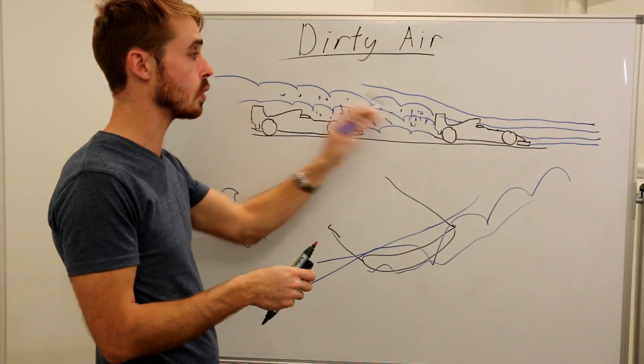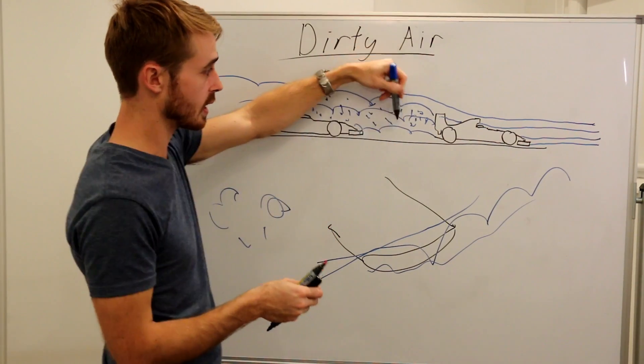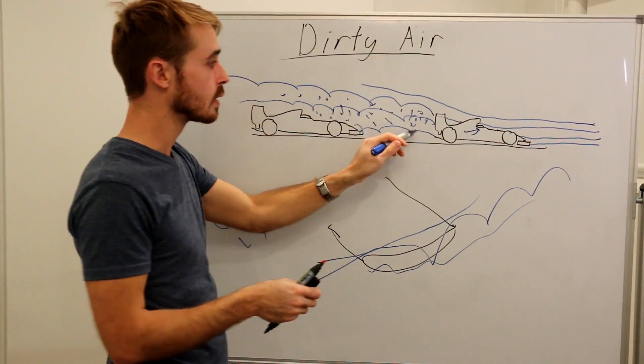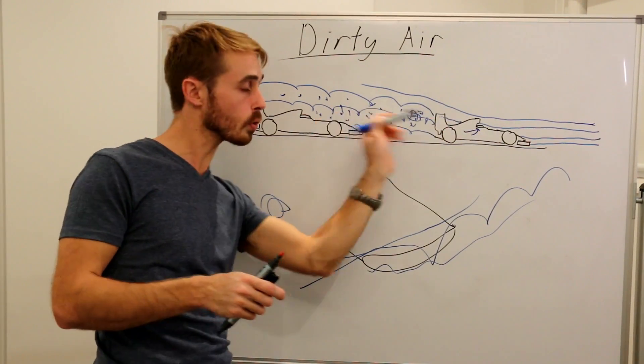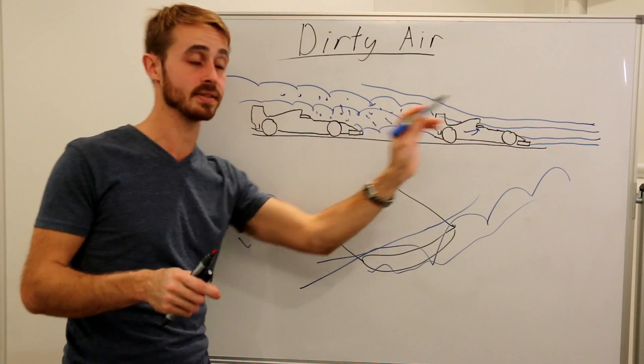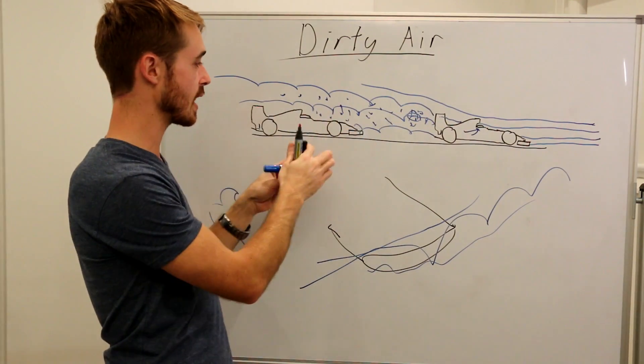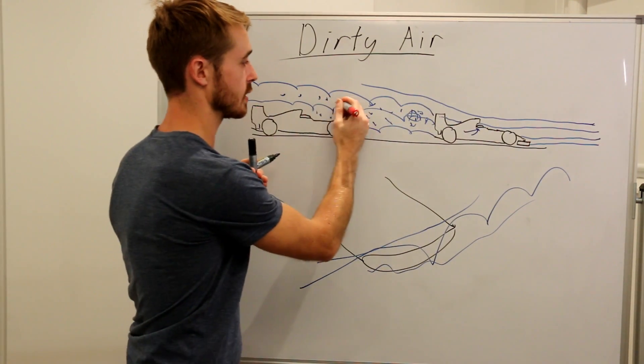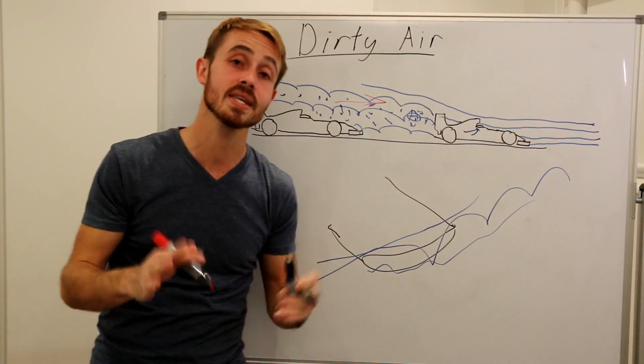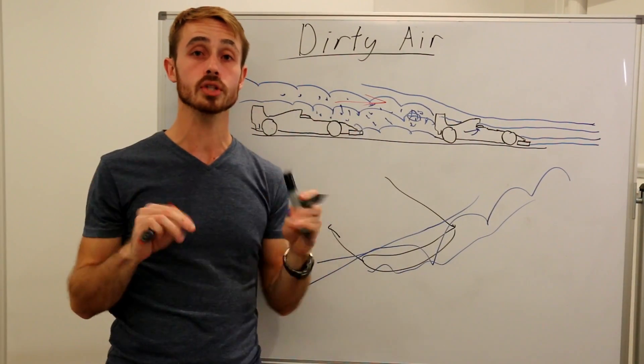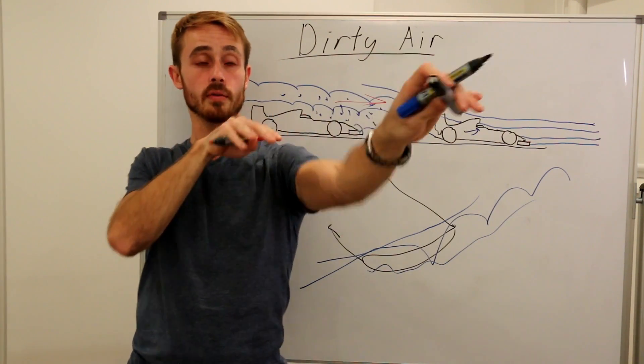So this car here is moving forward, right? This wake is being brought forward by the car as it's moving along. Which means that this airflow here actually has a net velocity that way. So this car at the rear is actually seeing less effective velocity on it because of the wash from the car in front of it.